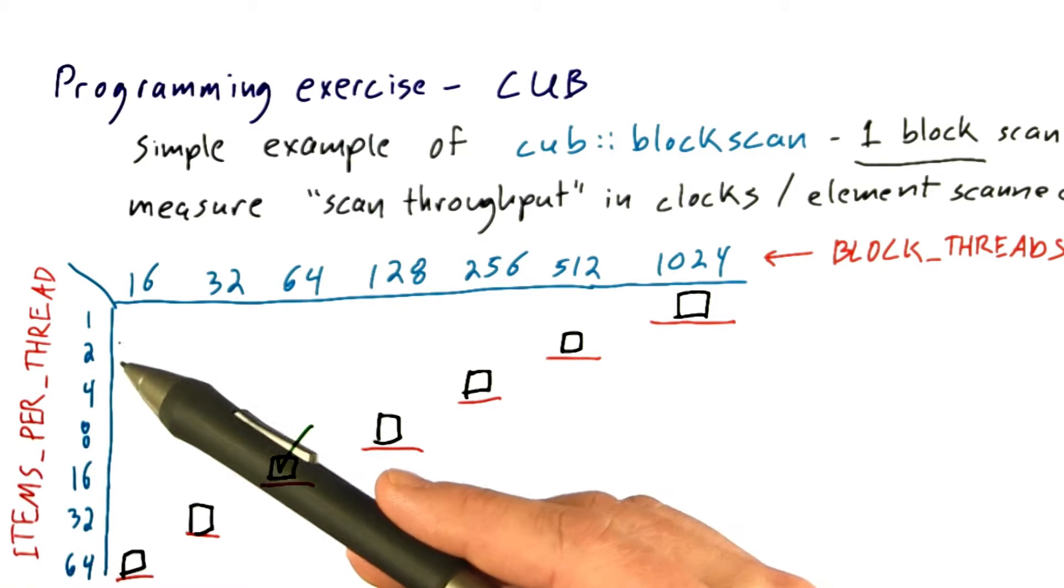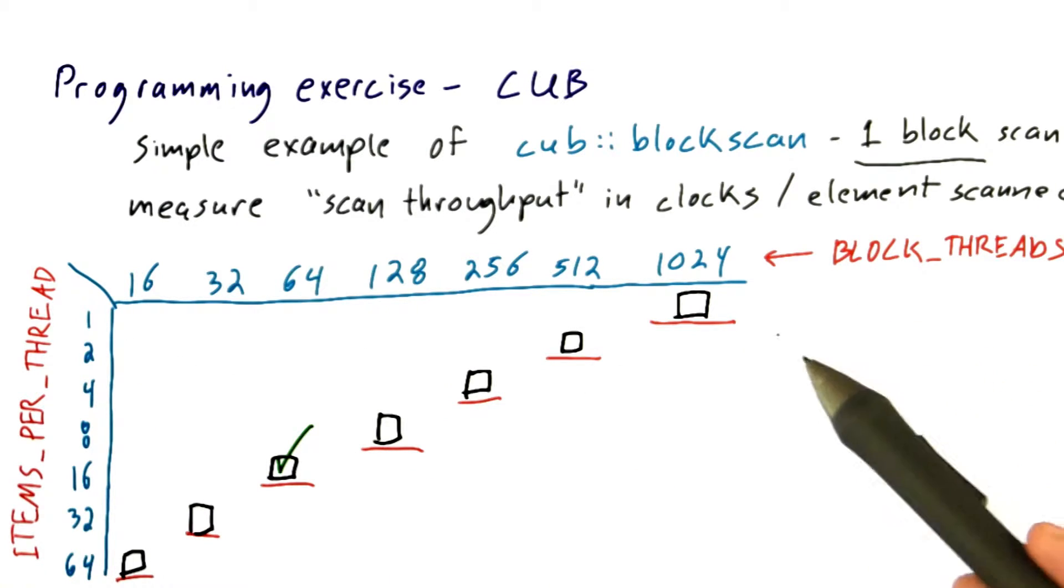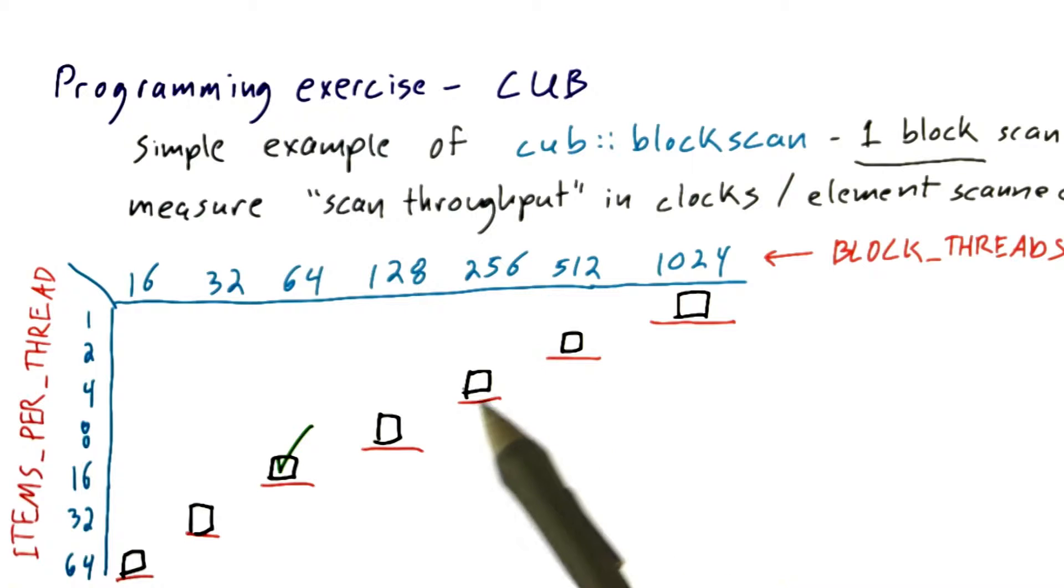On the other hand, if you've got a fixed tile size, in other words the tile here is the total number of items that we're scanning over, for a fixed tile size, there's diminishing returns. These numbers get smaller and smaller.